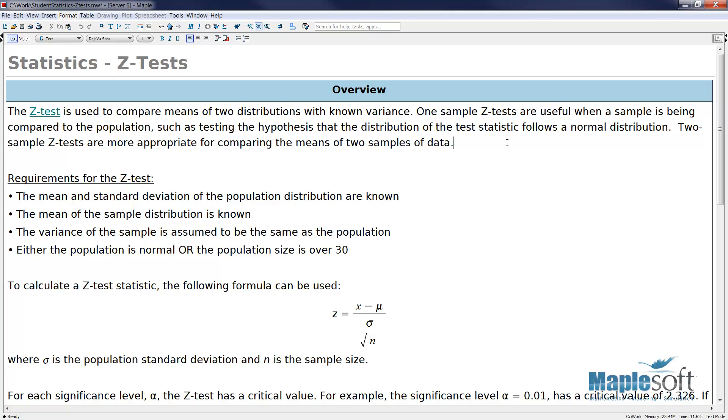The z-test is used to compare means of two distributions with known variants. One-sample z-tests are useful when a sample is being compared to the population, such as testing the hypothesis that the distribution of the test statistic follows a normal distribution. Two-sample z-tests are more appropriate for comparing the means of two samples of data.